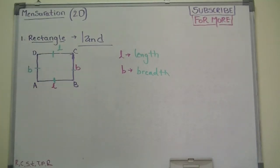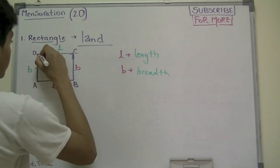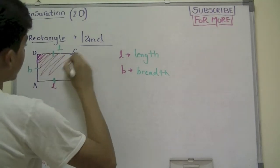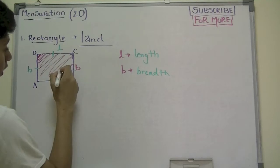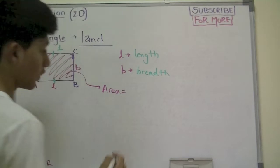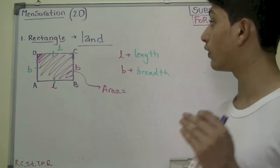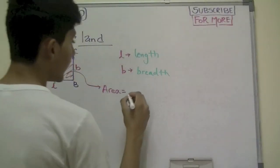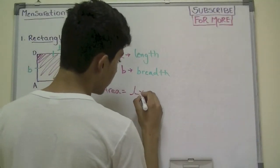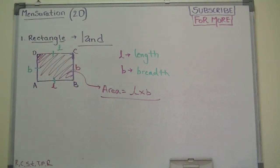Now let's start involving some formulas. The formula for finding the area — basically how much space is inside — is known as area. If a question says find the area of this figure and you know it looks like a rectangle, you would use length times breadth: Area = L × B.